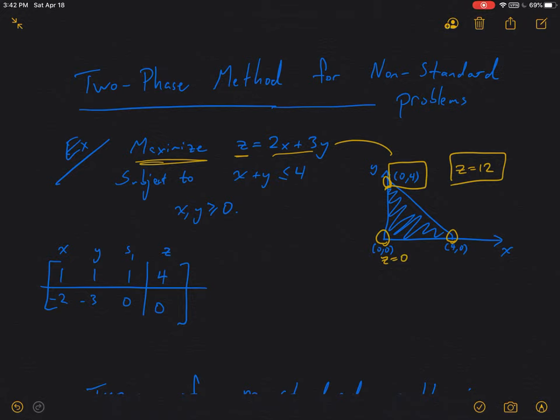So I've also written the simplex tableau that we would start with. This is the initial simplex tableau for this problem. Remember that to convert this inequality into an equality, I need to add a slack variable. So that's where that S1 column is coming from. I'm also suppressing the ordinary z column. So I'm identifying z with this bottom right value.